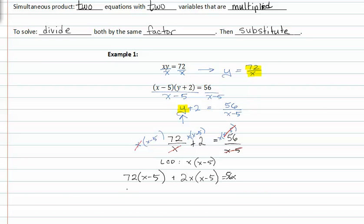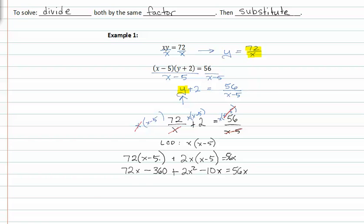Now I'm going to distribute through to drop my parentheses. I'm now going to rewrite this whole thing in order of descending exponents and combine like terms. This gives me two x squared plus sixty-two x minus three sixty equals fifty-six x. Subtracting fifty-six x from both sides, I now have two x squared plus six x minus three sixty equals zero.